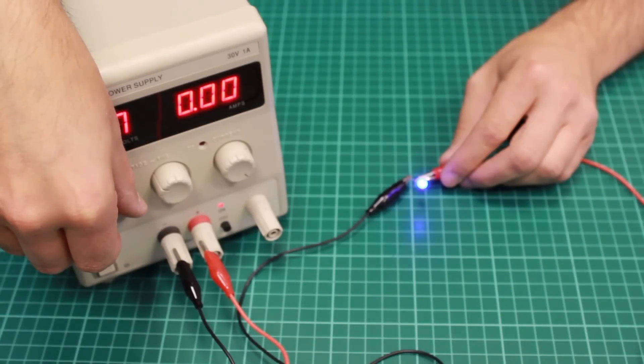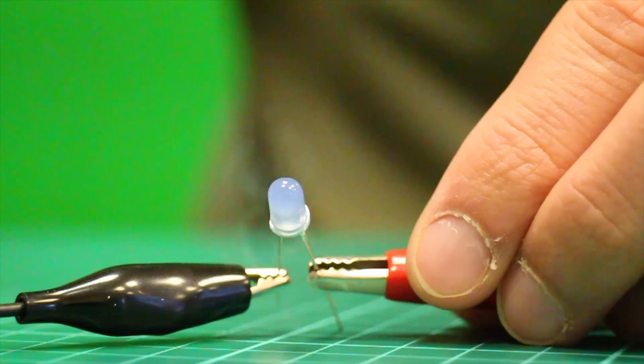If we used a much lower value resistor, a much higher current would flow through the LED and the LED itself could become damaged.